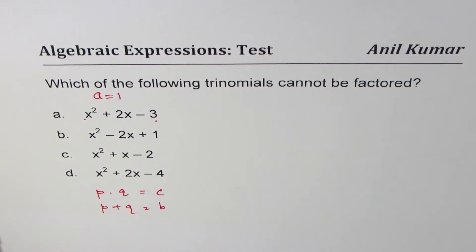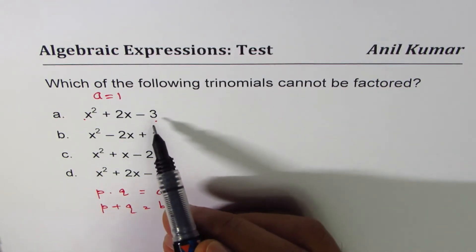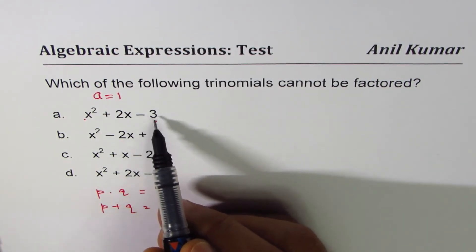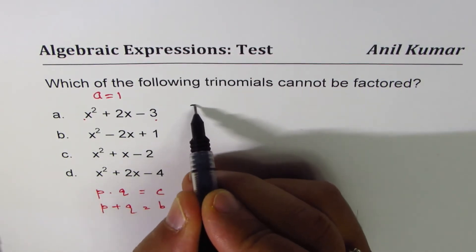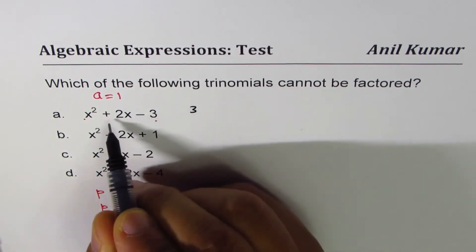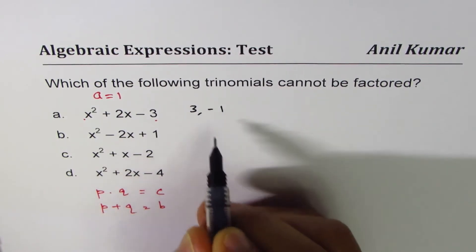It shouldn't take long. Let's try them one by one. So for the first case, minus 3, the product could be 3 times 1, and so the two numbers could be positive 3 and minus 1. That will give us the factoring.